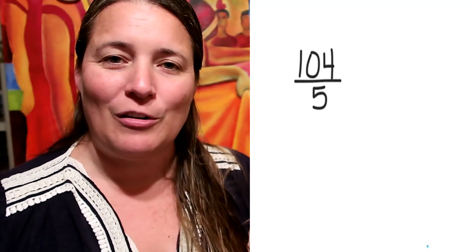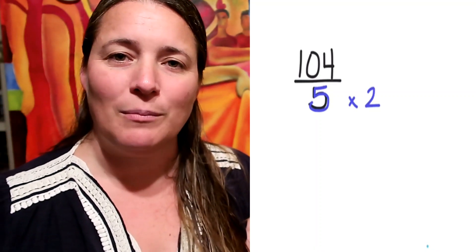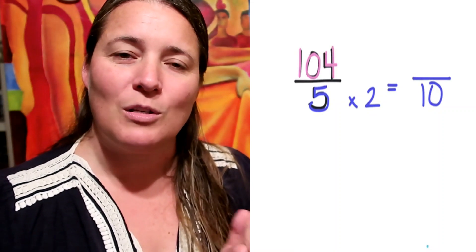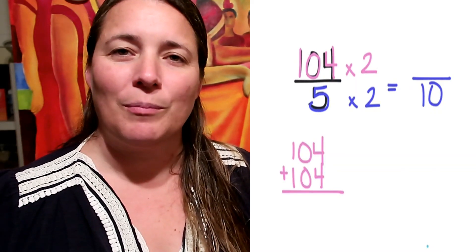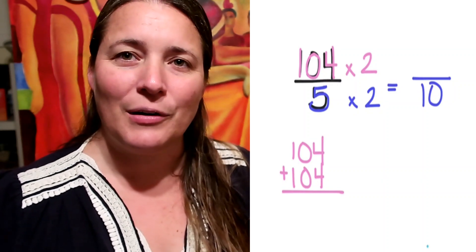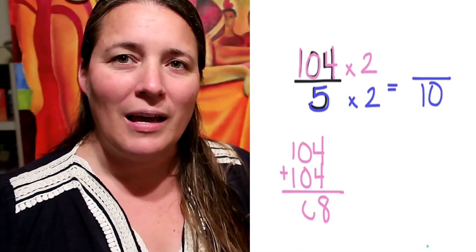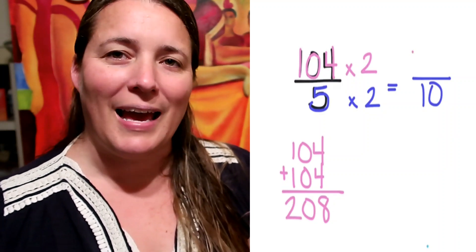So let's try something that's just a tiny bit harder. We're going to try 104 divided by 5. So the first thing we're going to do is get our 5 to the base 10. So 5 times 2 is 10. I have to then also do the same thing on the top. So I'm going to do 104 times 2. We're going to go ahead and add 104 plus 104. So 4 plus 4 is 8. Zero tens plus zero tens is zero. And 100 plus 100 is 200. So my total number is 208.